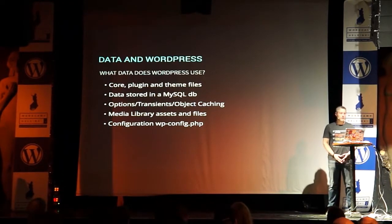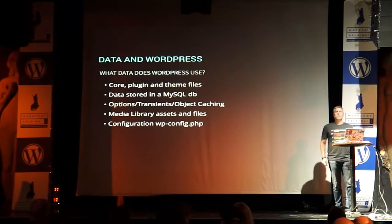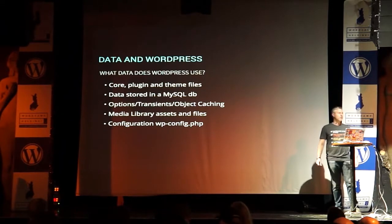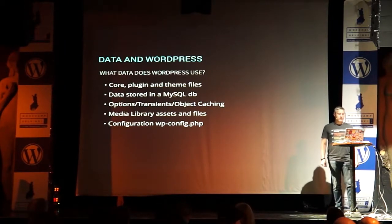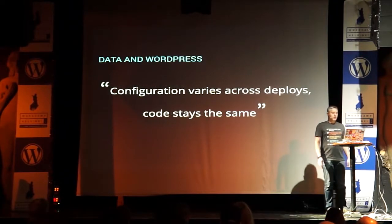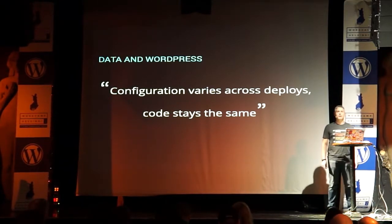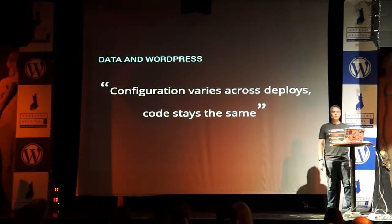WordPress uses a database to store its content — posts, pages, and options are all stored in the database. You can use transients and object caching, which is a more advanced type of data that expires at a certain point. You'll also use uploads — anything uploaded to WordPress is stored in the media library as an asset, typically larger files. I've also called out configuration separately because even though it's part of a PHP file and similar to core files, it's a little different because it will change. Your configuration will vary across your deploys, but the code stays the same.